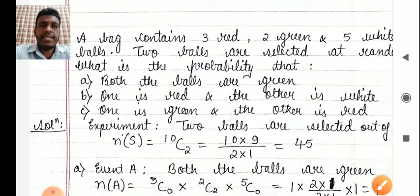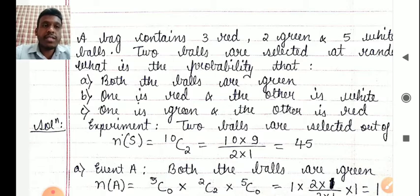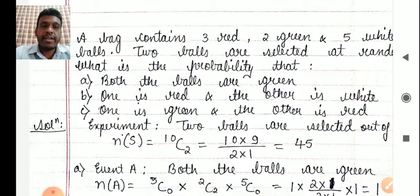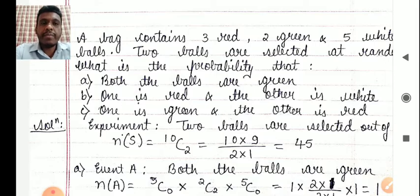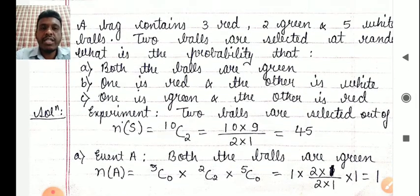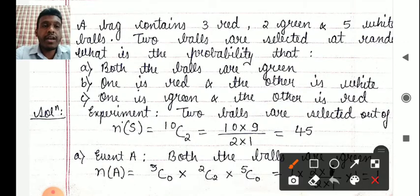The problem is the same bag: 3 red balls, 2 green balls, 5 white balls, total 10 balls. But now two balls are selected at a time at random. What is the probability that (A) both balls are green, (B) one is red and the other is white, (C) one is green and the other is red? Whenever two or three balls are taken, the counting technique changes.